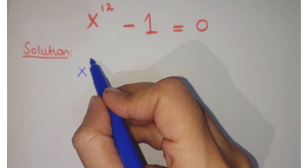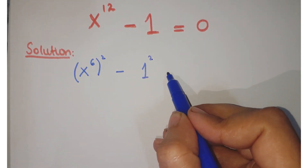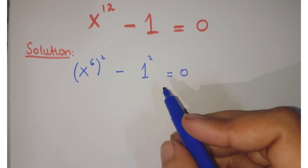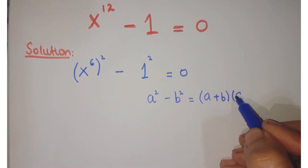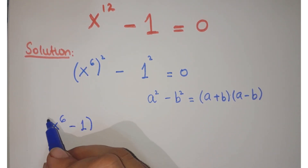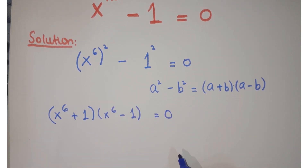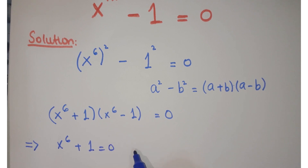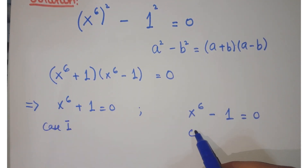First of all, you can write x to the power 12 as x to the power 6, whole squared, minus 1 written as 1 squared. Comparing with the algebraic identity a squared minus b squared equals a plus b into a minus b, you can write this as x to the power 6 plus 1, into x to the power 6 minus 1, equals 0. We have two possibilities: Case 1 is x to the power 6 plus 1 equals 0, and Case 2 is x to the power 6 minus 1 equals 0.